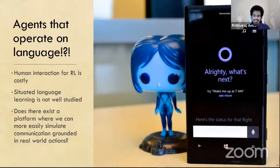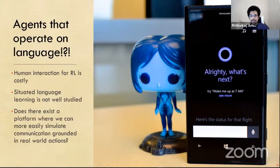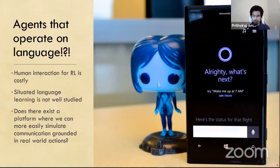These kinds of agents are kind of everywhere now — pick your favorite corporate brand. All of these things operate on language. But the problem is that the environment is people. In order for these things to learn interactively, they need to interact with humans to learn, and that's really quite costly — prohibitively so. As a consequence, situated language learning is not something that's been particularly well studied.